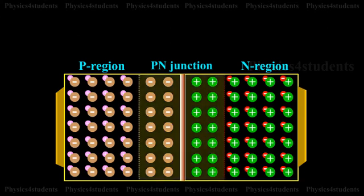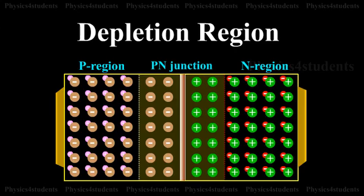Thus a region is formed which does not have any mobile charges very close to the junction. This region is called the depletion region.